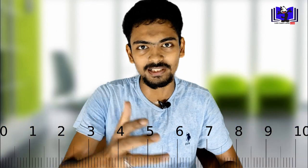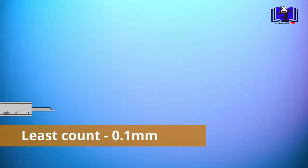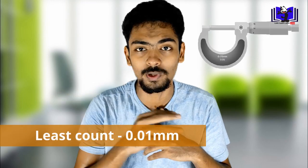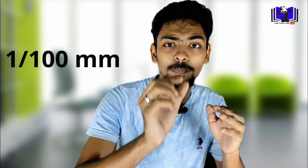The least count is 1 mm for a regular scale. If we measure with a Vernier caliper, the least count is 0.1 mm. And if you use a screw gauge, the least count is 0.01 mm. So 1 mm divided by 100 gives the screw gauge least count.